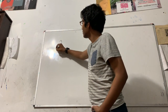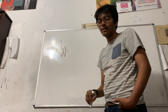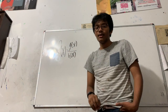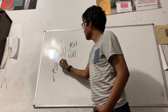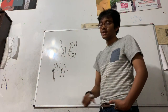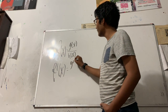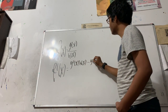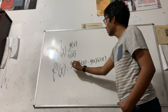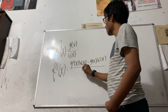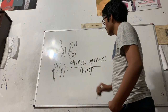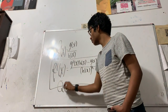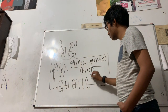Let's say we have a function f of x, defined as the quotient of two functions g of x and h of x. The quotient rule tells us that the derivative of f of x, denoted as f prime of x, can be written as the derivative of the top function times the bottom function, minus the derivative of the bottom function times the top function, all divided by the bottom function squared. And that right there is the quotient rule.